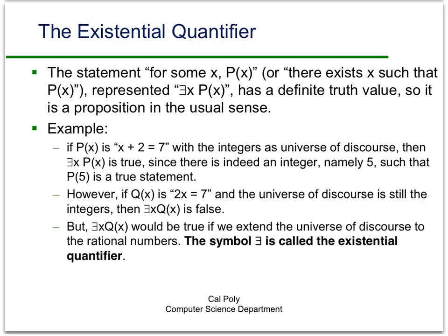Now we'll talk about two really important symbols called quantifiers. These enable us to make statements about propositional functions — whether they're true all the time, some of the time, or never, for a given domain of discourse. The first one is the existential quantifier. This is the statement 'for some x, the propositional function is true,' and we read it as 'for some x, P(x)' or 'there exists x such that P(x) is true.'